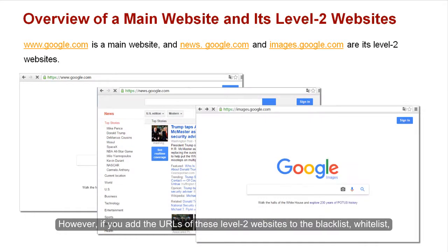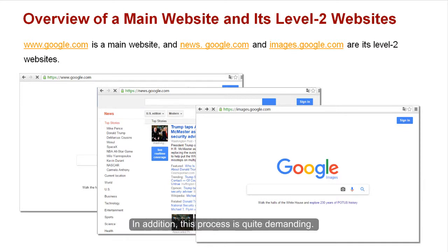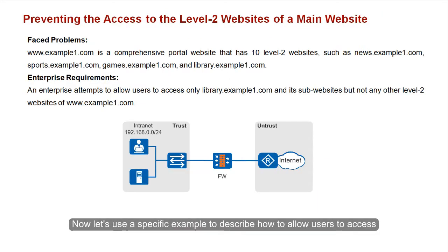However, if you add the URLs of these level 2 websites to the blacklist, whitelist, or user-defined categories one by one, you may leave out certain websites unintentionally. In addition, this process is quite demanding. Now let's use a specific example to describe how to allow users to access only a specific level 2 website of a main website.